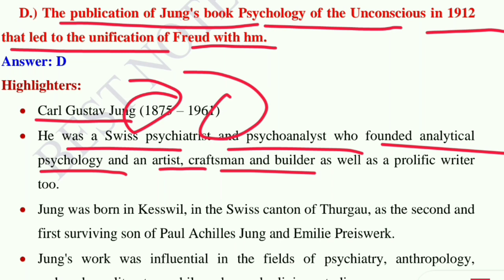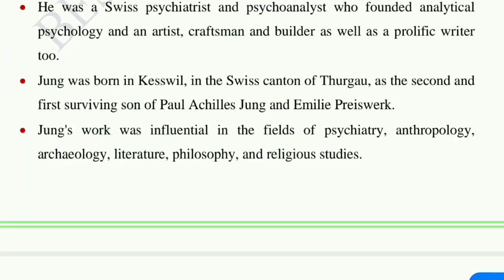Jung was born in Kesswil in the Swiss canton of Thurgau, as the second and first surviving son of Paul Achilles Jung and Emilie Preiswerk. Jung's work was influential in the fields of psychiatry, anthropology, archaeology, literature, philosophy, and religious studies.